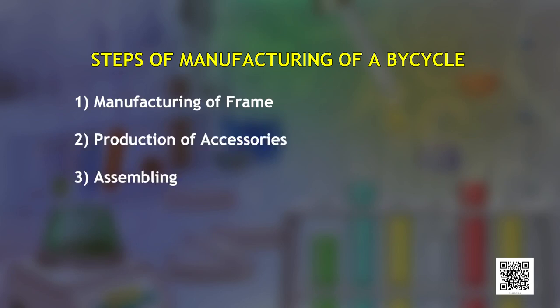This concept can be understood better by drawing an analogy with the manufacturing of a bicycle. Steps involved in the manufacturing process are: manufacturing of the frame, production of accessories, and assembling. Manufacturing of the frame requires one complete day, while manufacturing of accessories takes half a day. We can manufacture as many accessories as we want in a day, but assembling is not possible without the frame. Hence, the rate of production of a bicycle depends on the rate at which the frame is manufactured — the slowest step — which is the rate determining step.